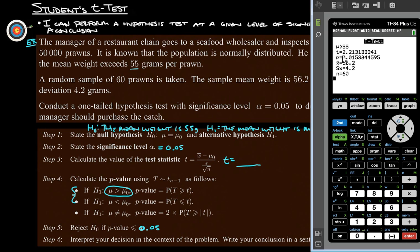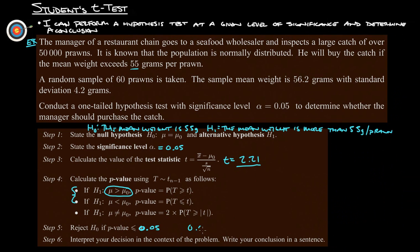Okay, so our test statistic is 2.21. And then our p-value is 0.015. So is that less than or equal to 0.05? It says right here reject H₀ if the p-value is less than 0.05, and our p-value is, so that means that we are going to reject H₀.